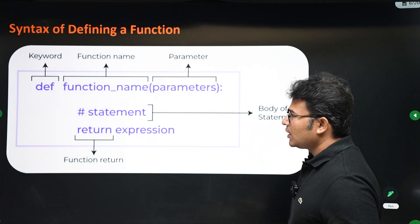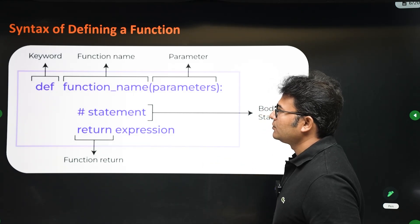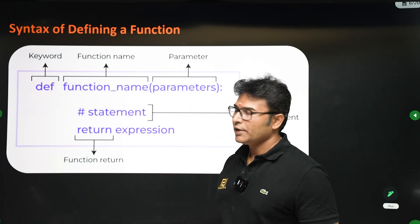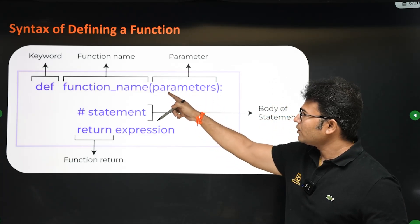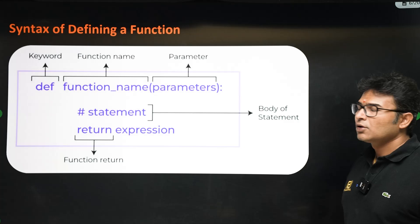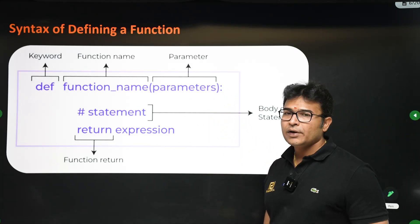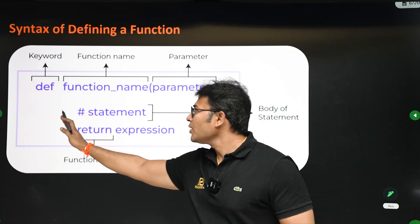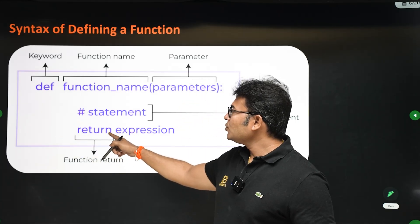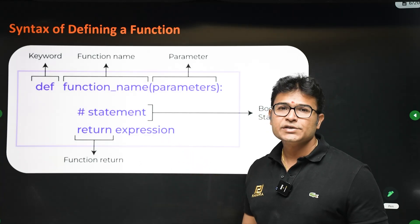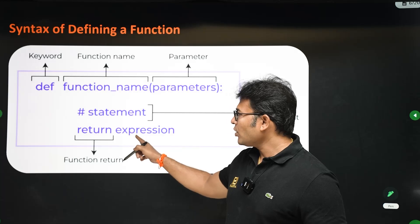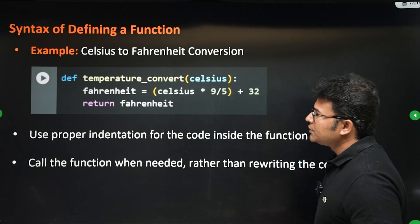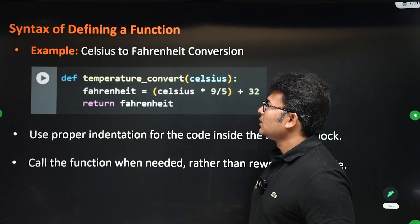Looking at the anatomy of a function: it starts with the keyword `def`, followed by the function name, then the parameters, then a colon. After the colon you write any number of statements with proper indentation. At the end you write a `return` statement for what you want to return — if you are not returning anything, you just have `return` with nothing.